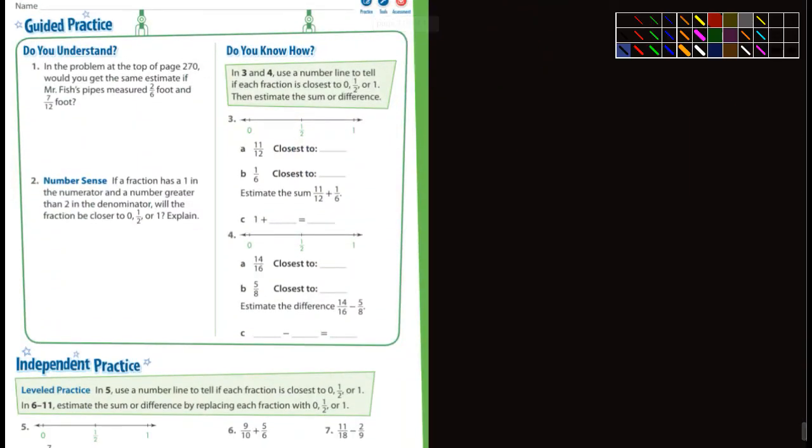The guided practice. Let's take a look at that here. In the problem at the top of page 270, would you get the same estimate if Mr. Fisher's pipes measured two-sixths of a foot and seven-twelfths of a foot? Well, two-sixths, that's the same as one-third and that's probably closer to a zero as far as estimating. Seven-twelfths, if you were to look at seven-twelfths, that's closest to one-half. So you would get the same. So yes, you would.